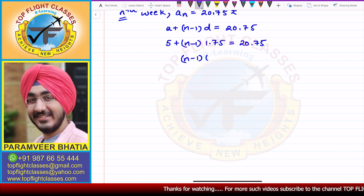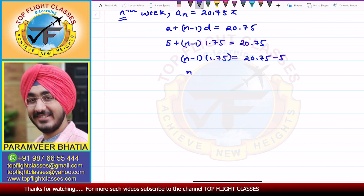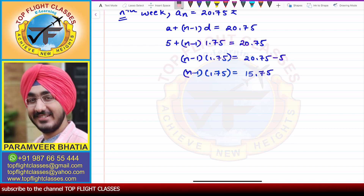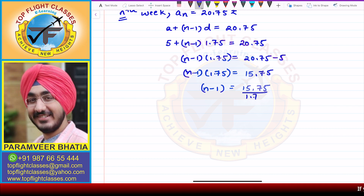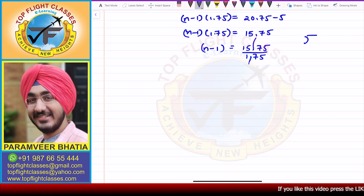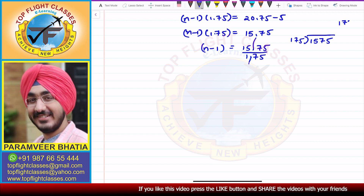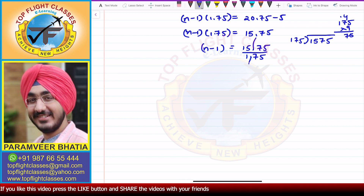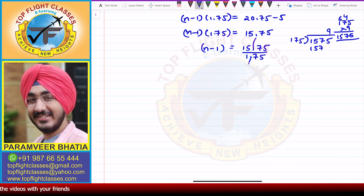I get (n minus 1) times 1.75 equals 20.75 minus 5, which is 15.75. So n minus 1 equals 15.75 divided by 1.75. The decimals cancel, giving 1575 divided by 175. Now 175 times 9 is 1575 — since 9 fives are 45, 9 sevens are 63 plus 4 is 67, 9 ones are 9 plus 6 is 15 — so the remainder is 0. Therefore n minus 1 equals 9.